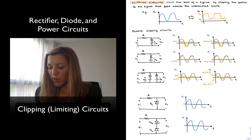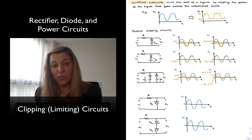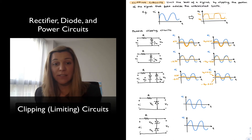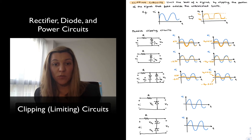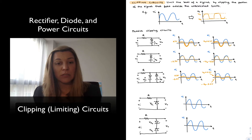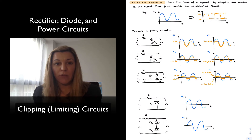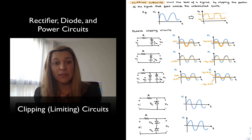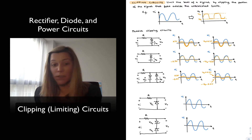The idea is that whenever VIN goes into the positive half cycle and reaches the value of VZ1, the Zener will go into Zener breakdown. So essentially the voltage will remain constant across the Zener at the Zener voltage value, regardless of further increases in VIN. We have effectively limited or clipped the VIN signal to the level of the Zener voltage.